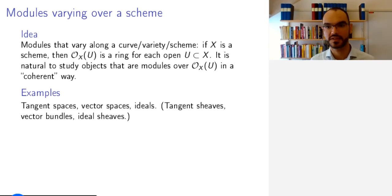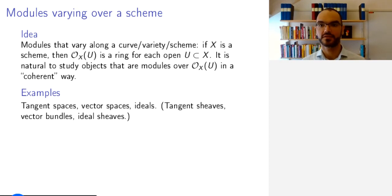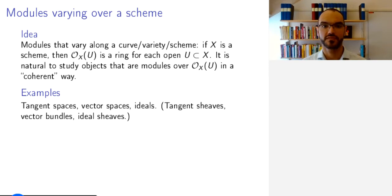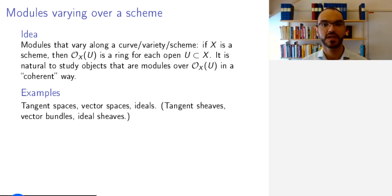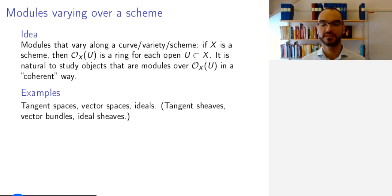Why do we want to do this? Well, not all sheaves that are important are sheaves of rings, and not all sheaves that can give us information about a scheme sit inside its structure sheave. For example, we might want to study tangent spaces that vary along a scheme — this gives us the tangent sheave. Vector spaces give us vector sheaves or vector bundles. When we defined closed sub-schemes, we needed ideals, and this relates to ideal sheaves that globalize this phenomenon, and so on.